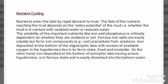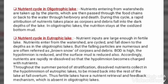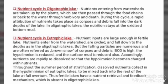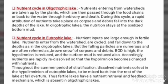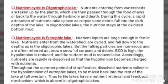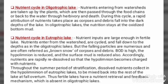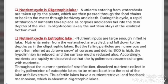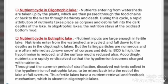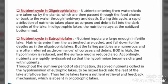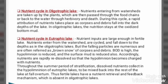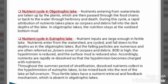In the nutrient cycle of an oligotrophic lake, nutrients entering from water are taken up by plants, which are then passed through the food chains or back to the water through herbivory and death. In a eutrophic lake, nutrient inputs are larger. Fertile lakes have a nutrient retrieval and feedback mechanism which is absent in oligotrophic lakes.